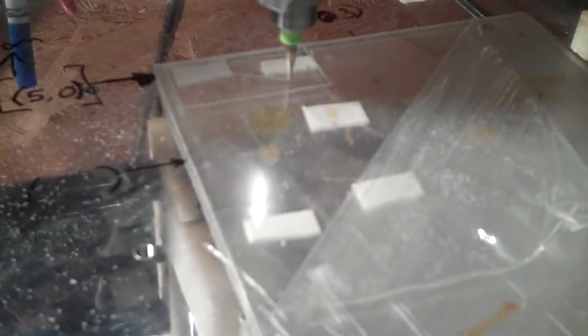I'm trying my hand at routing some plexiglass. I'm supposed to only be taking 2 thousandths off at a time. This is at 25 inches per minute feed rate, but it's also a broken bit, and I think I need to go faster.